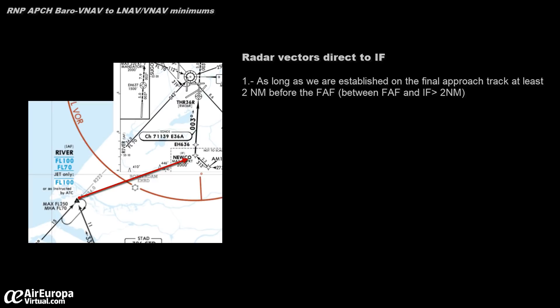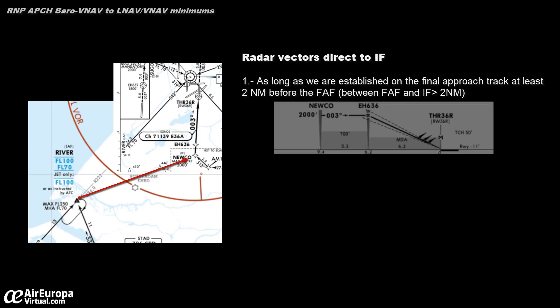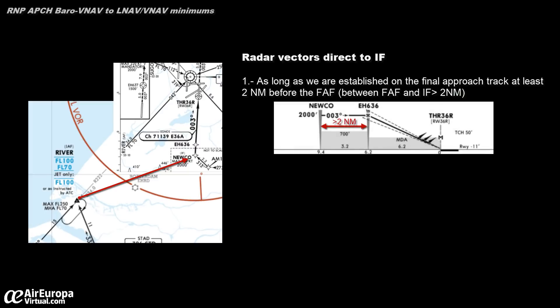During the initial approach, it is possible that ATC gives us direct vectors from the initial approach fix to the intermediate fix. However, we must consider some limitations. First, direct vectors to the intermediate fix are accepted only if the distance between the final approach fix and the intermediate fix is greater than 2 miles. Second, the intercepting angle must not be greater than 45 degrees with respect to the final approach track. In this case, from River to Nikko, this condition is not complied with.